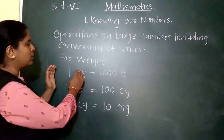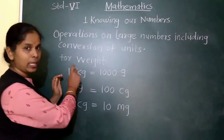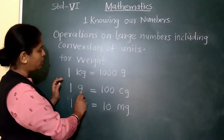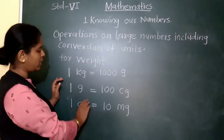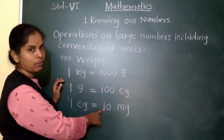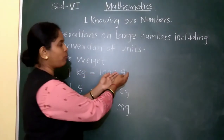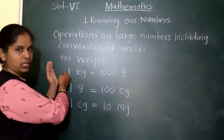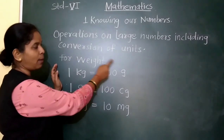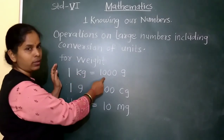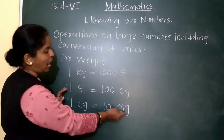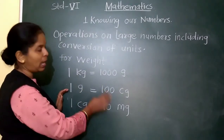When we have to convert bigger units into smaller, we multiply. From kilogram to gram, multiply by 1000. From gram to centigram, multiply by 100. From centigram to milligram, multiply by 10. When we want to convert smaller units into bigger, we divide. From gram to kilogram, divide by 1000. From centigram to gram, divide by 100. And from milligram to centigram, divide by 10.